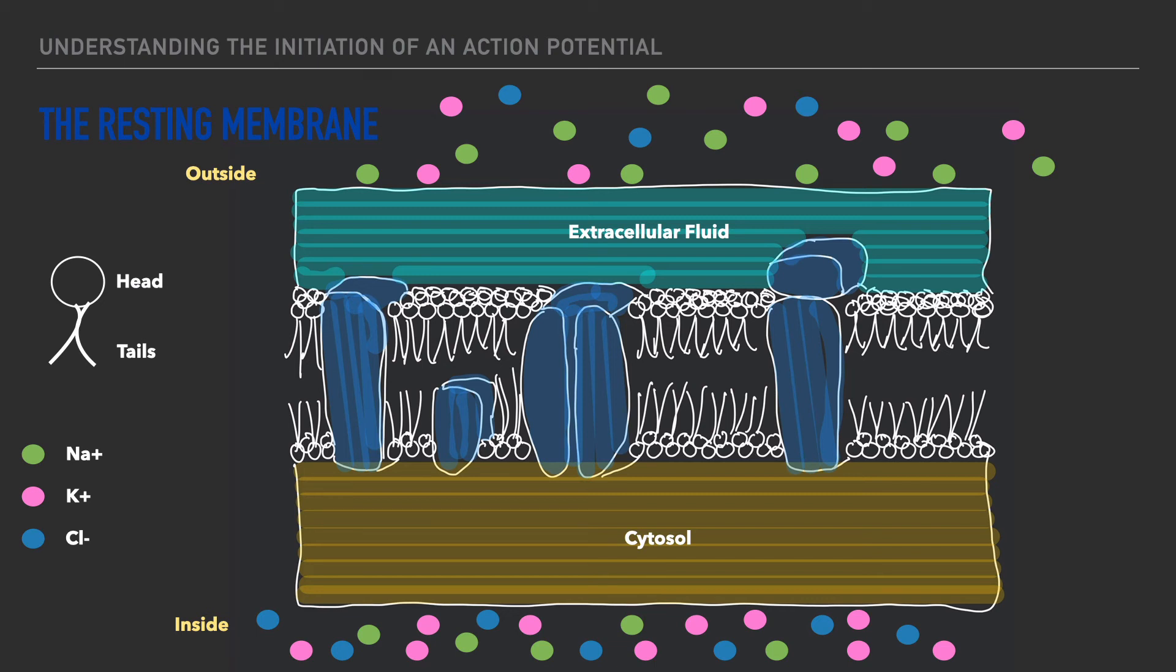And here's our chloride on the inside of the cell. Now because chloride is negatively charged and we have more negatively charged ions on the inside of the cell, we say that the inside is negative while the outside is more positive in comparison to one another.